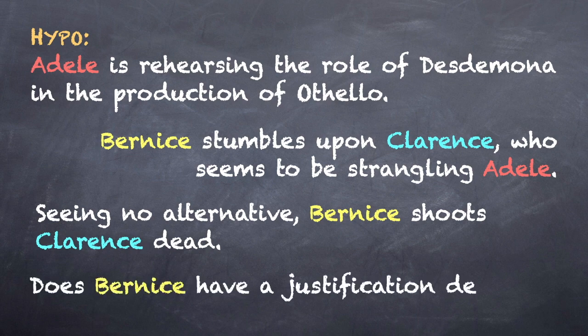Does Bernice have a justification defense? Bernice thinks she is defending Adele. In reality, Adele is not threatened at all — Clarence is simply rehearsing the role of Othello. If Bernice had been correct, she would be entitled to acquittal of charges of criminal homicide.